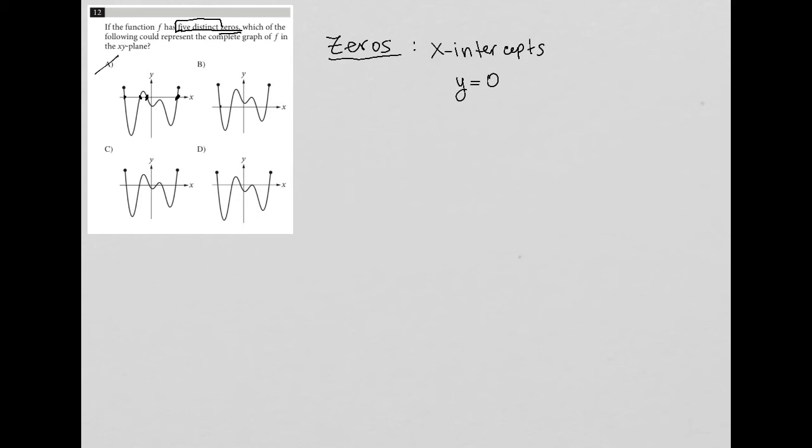So for B, there's one, there's two, there's three, and there's four. So B is out.